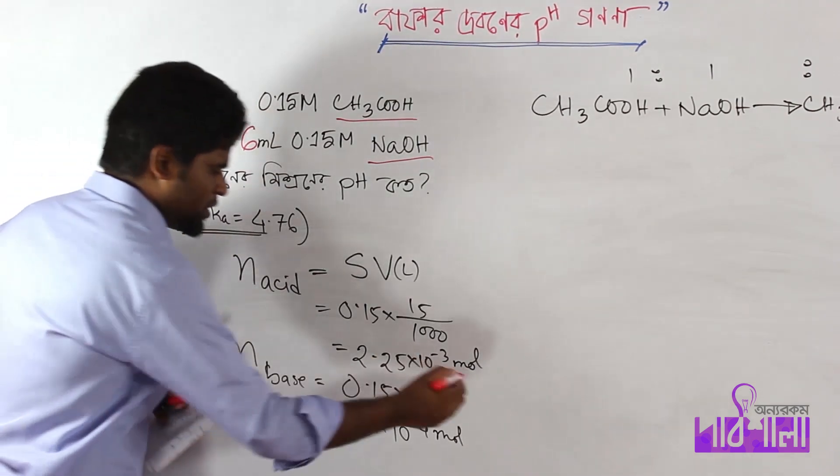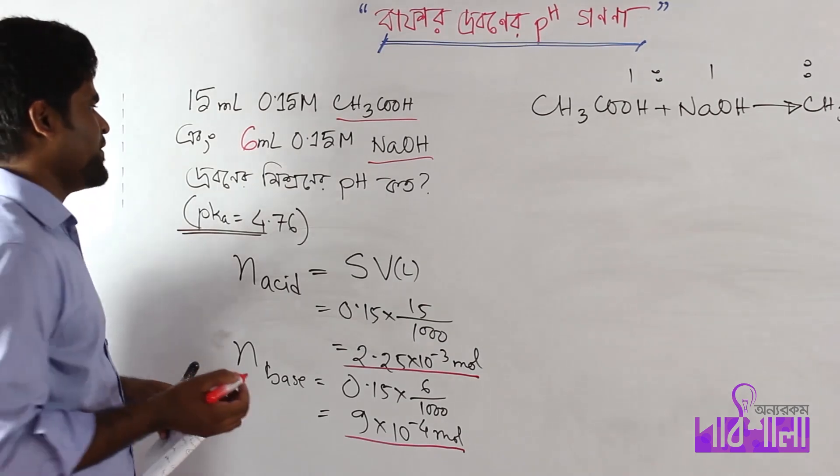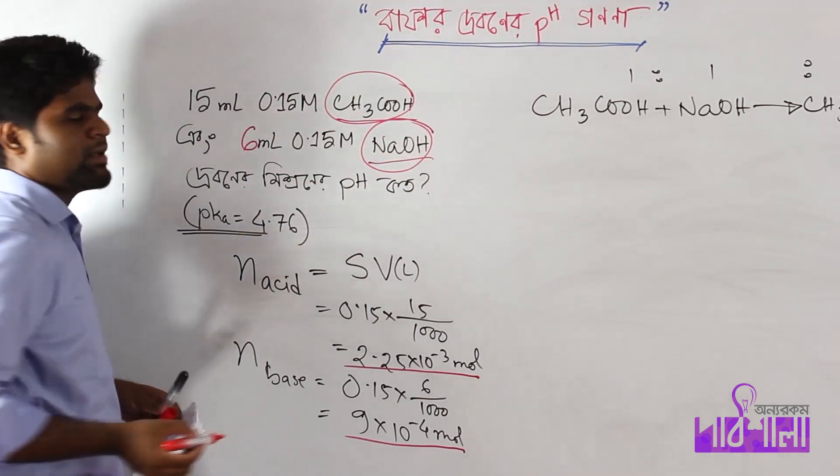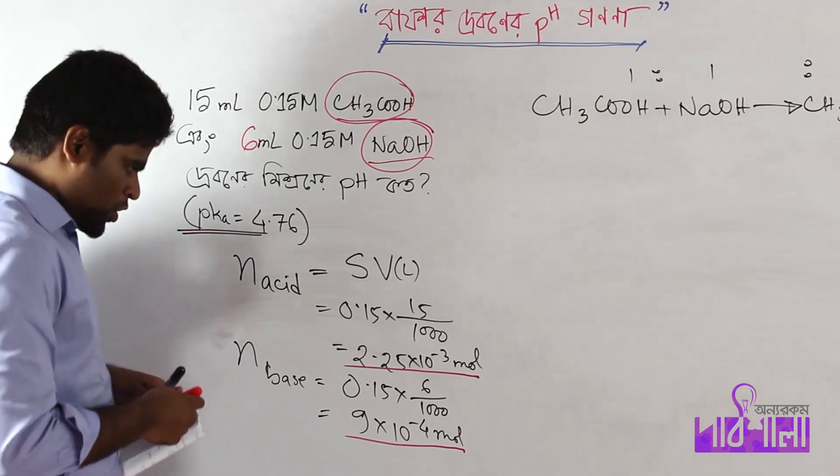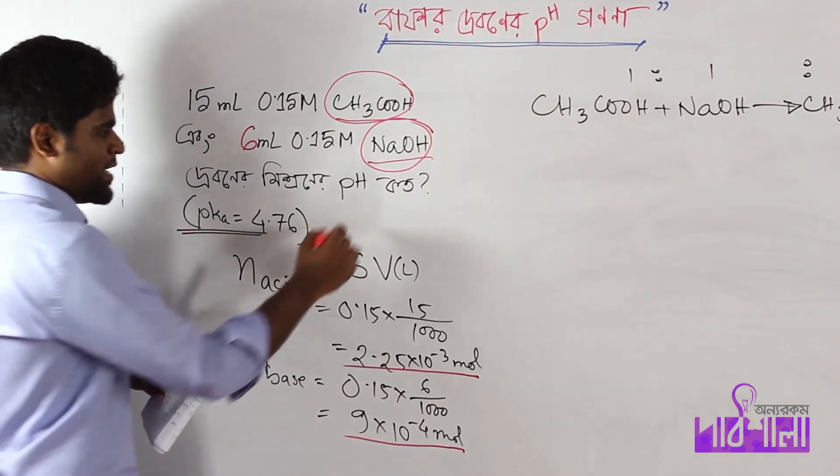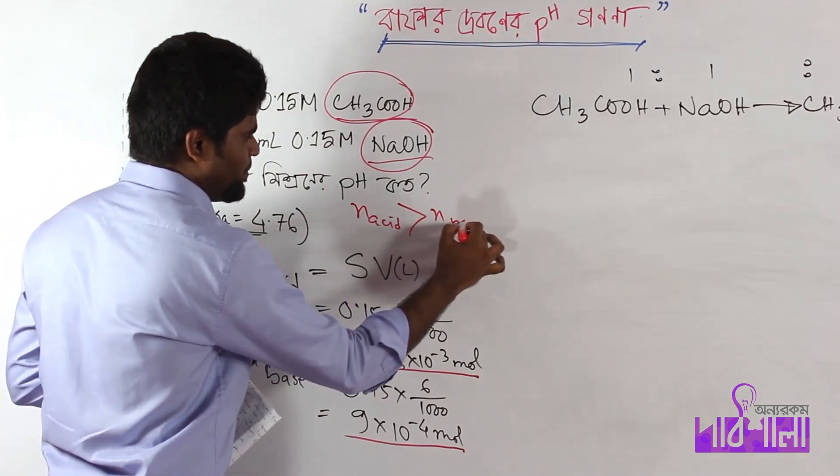Now let's look at n of acid. The acid amount is greater than n of base, so we have excess acid remaining after the reaction.